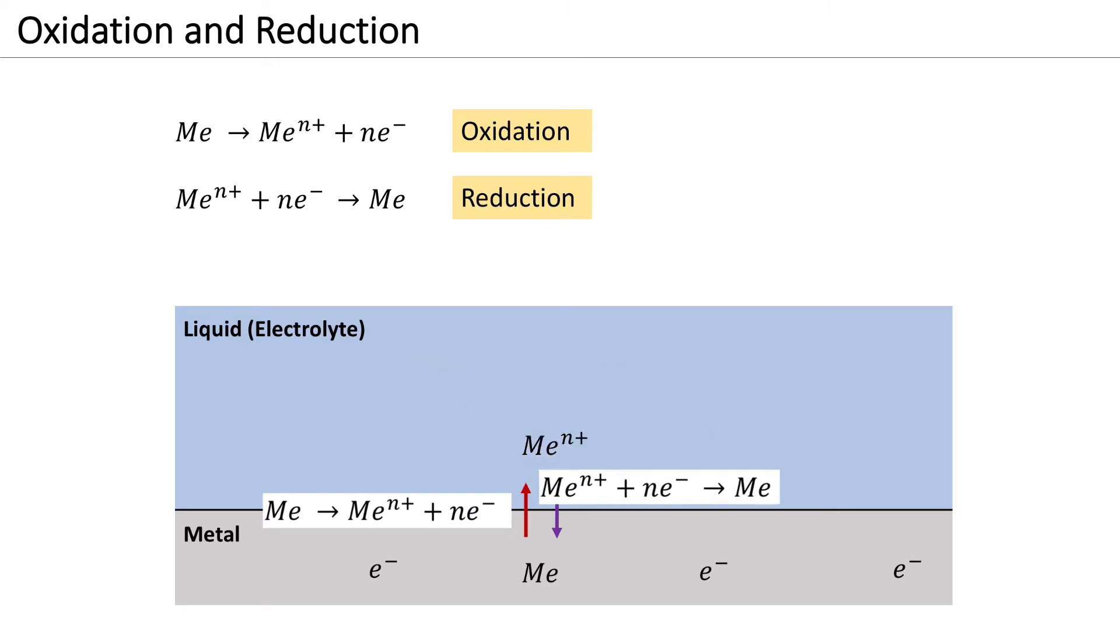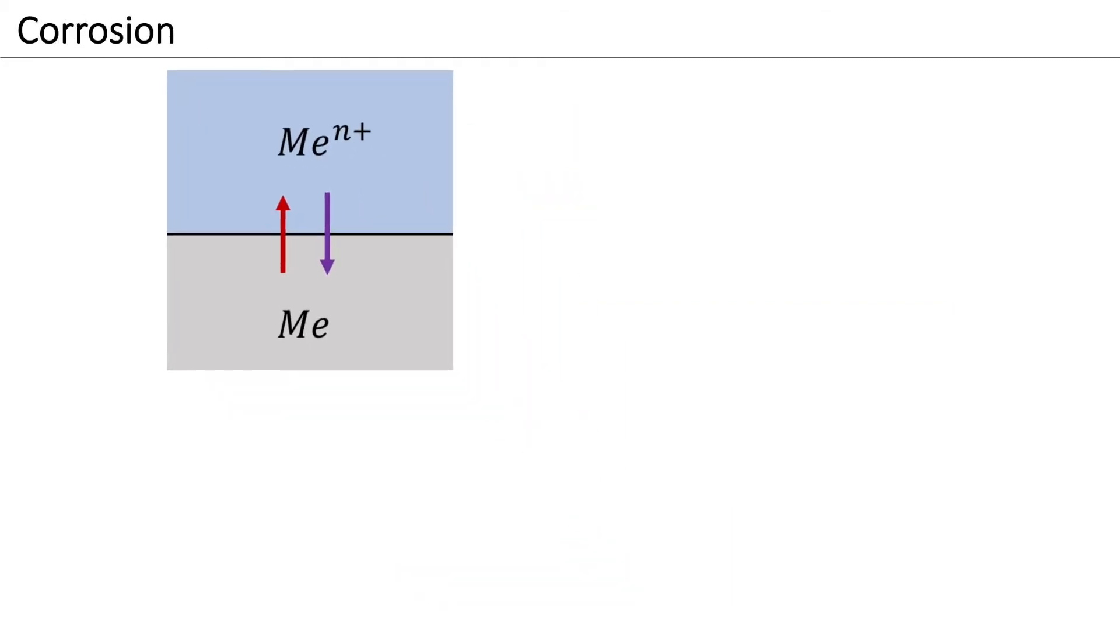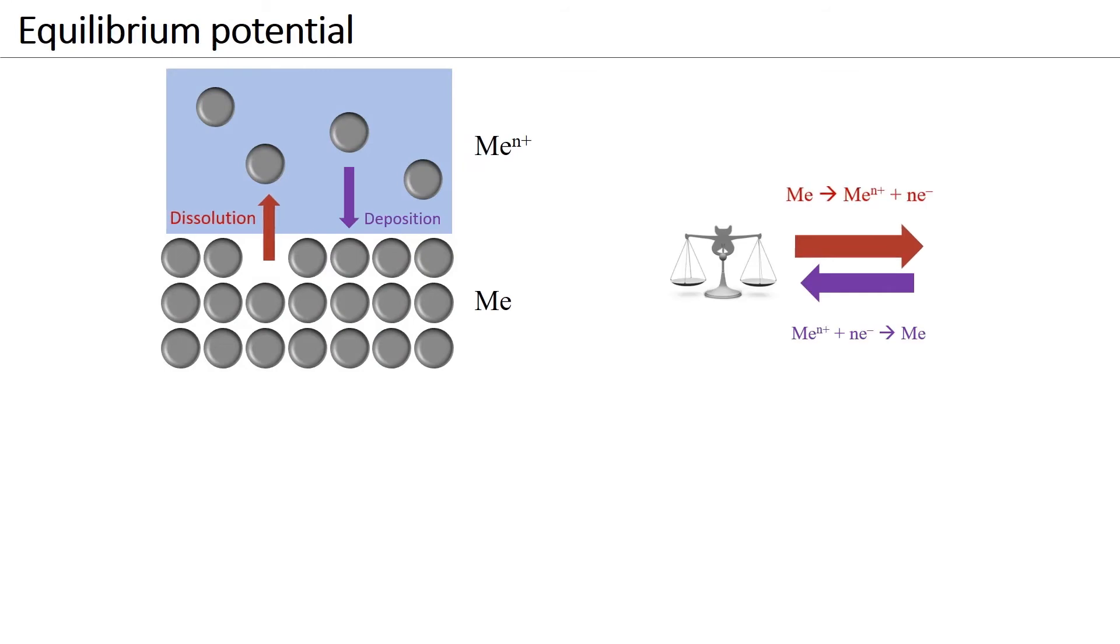The metal ions in the liquid react with electrons in the metal and become metal atoms deposited on the metal surface. When the metal dissolution and the metal deposition reactions occur at the same rate, the electrode is at the so-called equilibrium potential, sometimes also referred to as reversible potential.